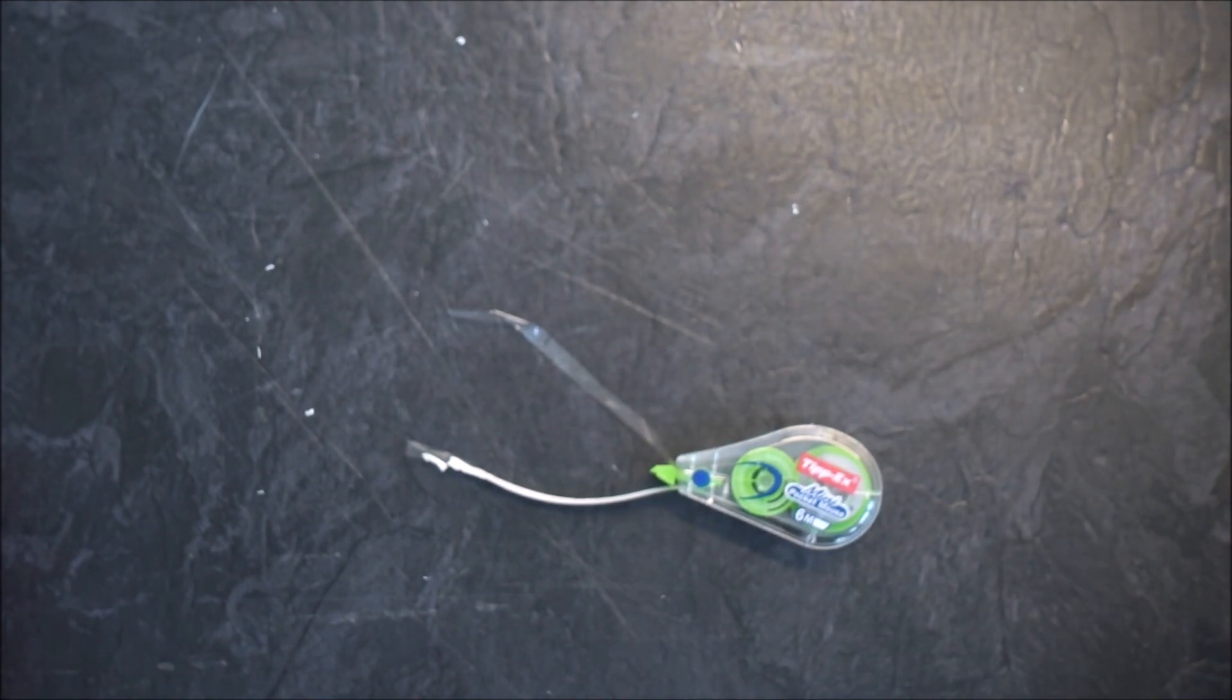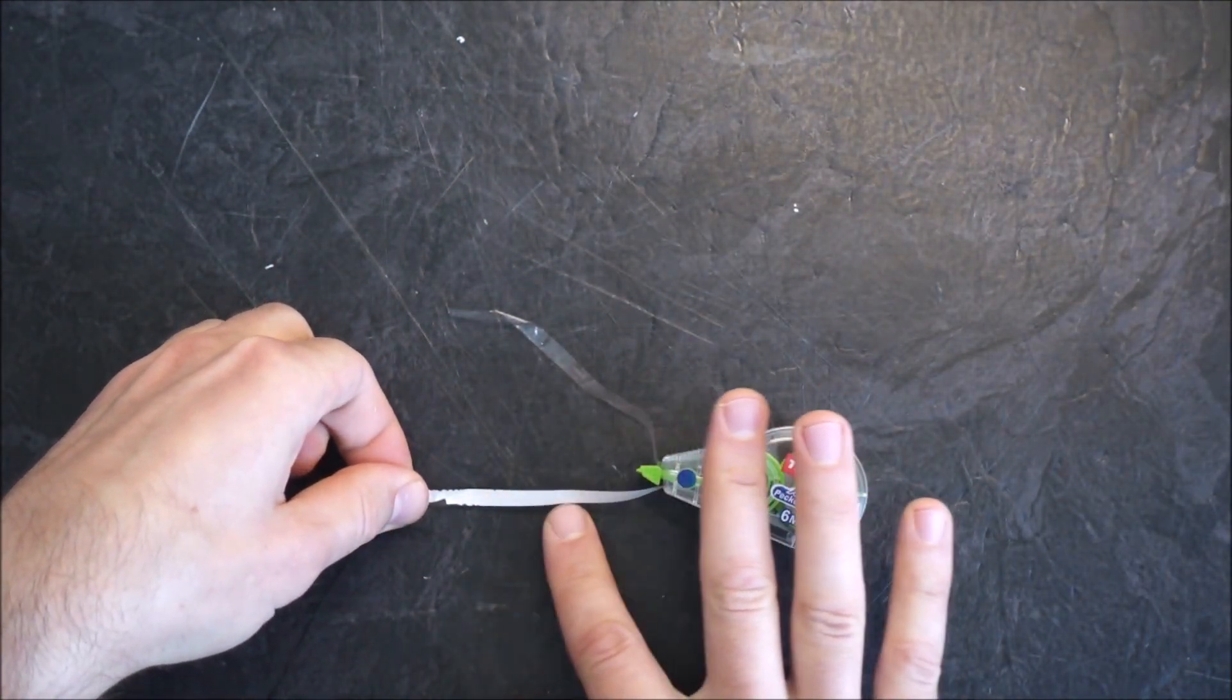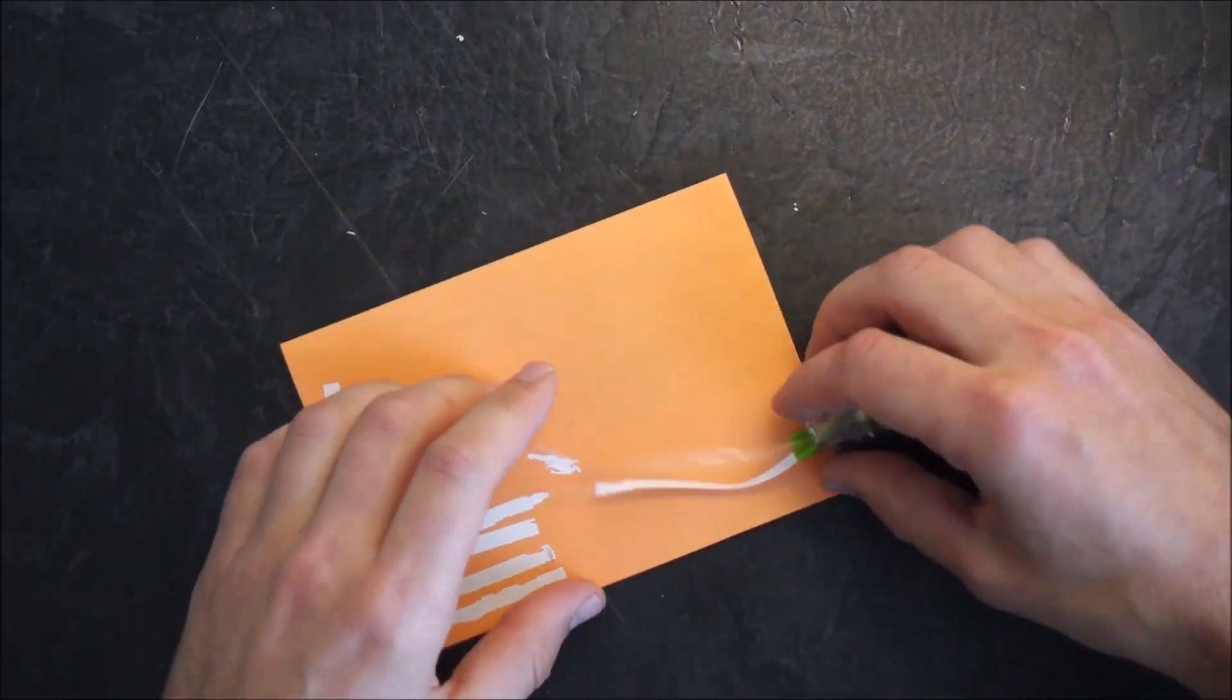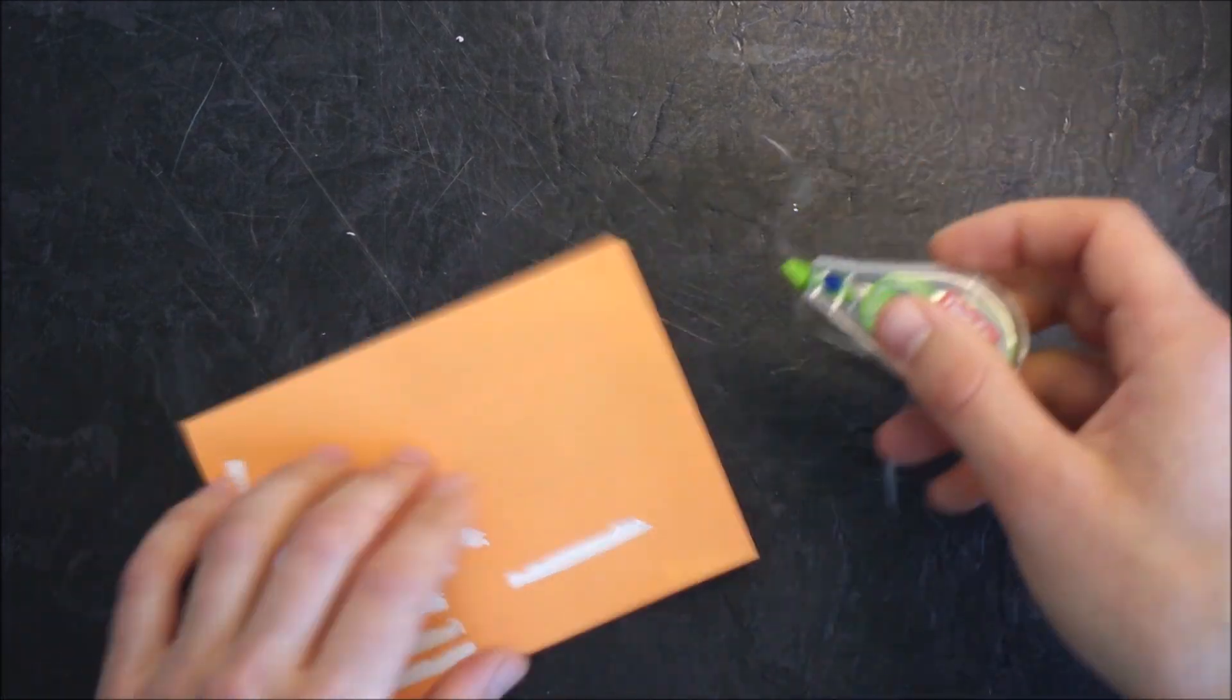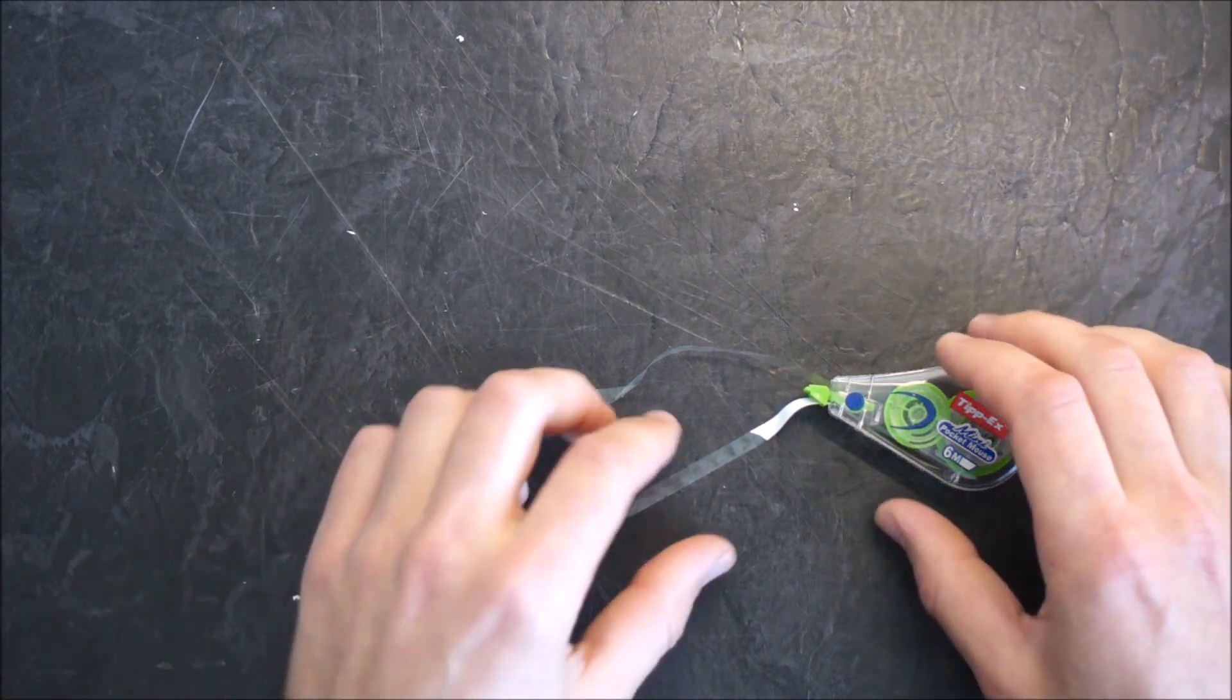The next thing we need to do, since we'll be taping it together, is clean off this bit of whiteout. Take a piece of paper and press it down in the paper. Now we have a clean surface that the tape can stick to.